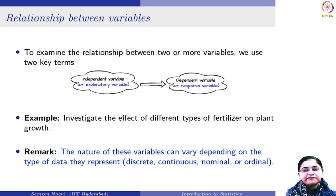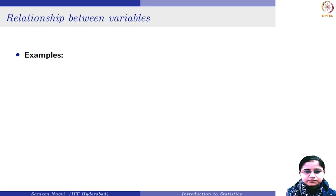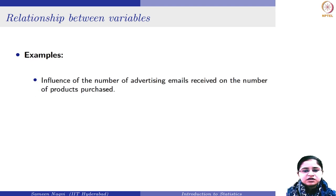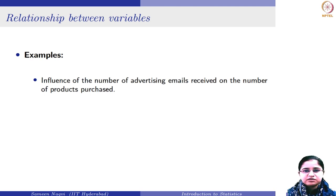In a similar way, you can have different other scenarios where the independent variable can be of any of these types or maybe a combination. For instance, a company can send different advertising emails to its customers, and the company is interested to see what is the impact of the number of advertising emails a person receives on the number of products they are going to purchase.